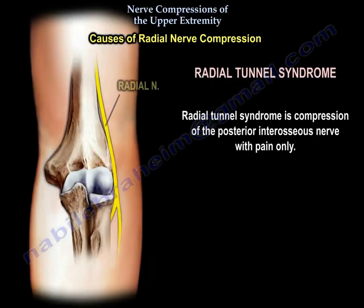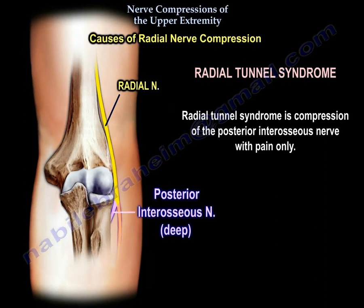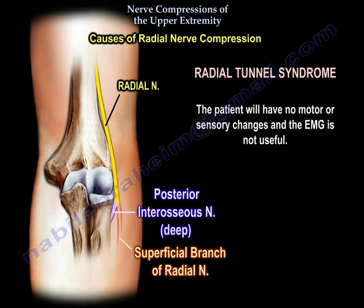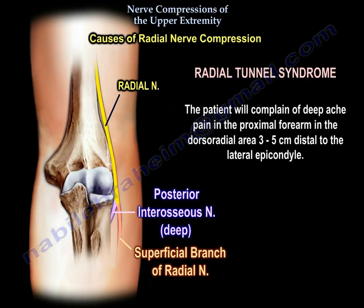Radial tunnel syndrome is compression of the posterior interosseous nerve with pain only. Rule out lateral epicondylitis, as it co-exists in 5% of patients. The patient will have no motor or sensory changes and EMG is not useful. The patient will complain of deep aching pain in the proximal forearm in the dorsal radial area, 3 to 5 cm distal to the lateral epicondyle.